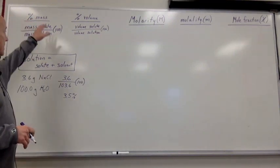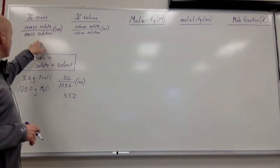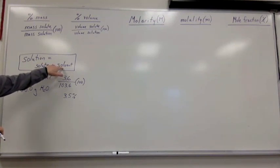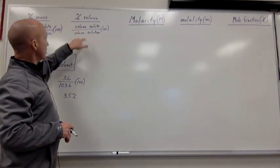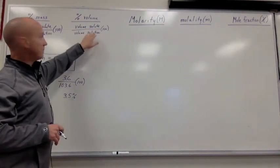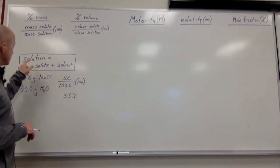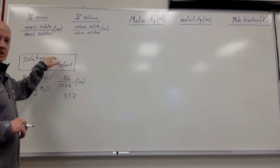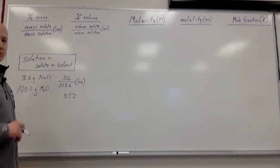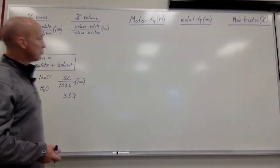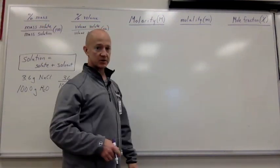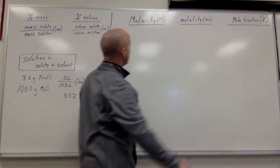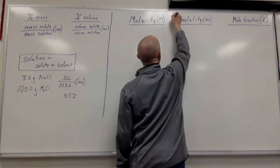So percent by mass, mass of solute divided by mass of solution times 100, where the solution is equal to the solute plus the solvent. That's important to remember. Percent by volume is the volume of the solute divided by the volume of solution times 100. Again, where the solution is equal to the solute plus the solvent. I'm going to keep saying this because it's going to make a big difference. Okay? Especially when it comes to the next type, the next way in which we calculate concentration. And we're going to spend a little bit of time on this one. So I'm going to make a little box here, right? Give us some room to work.